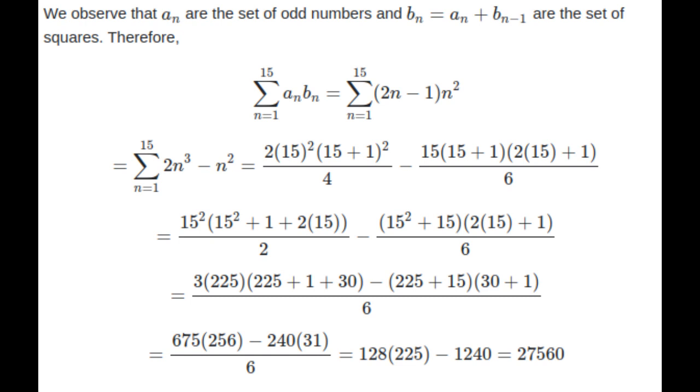Now bₙ, being aₙ plus bₙ₋₁, are nothing but the set of squares. This can be seen by observing that the sum of consecutive odd numbers is always a square. Using this observation, we can get that bₙ are the set of squares.